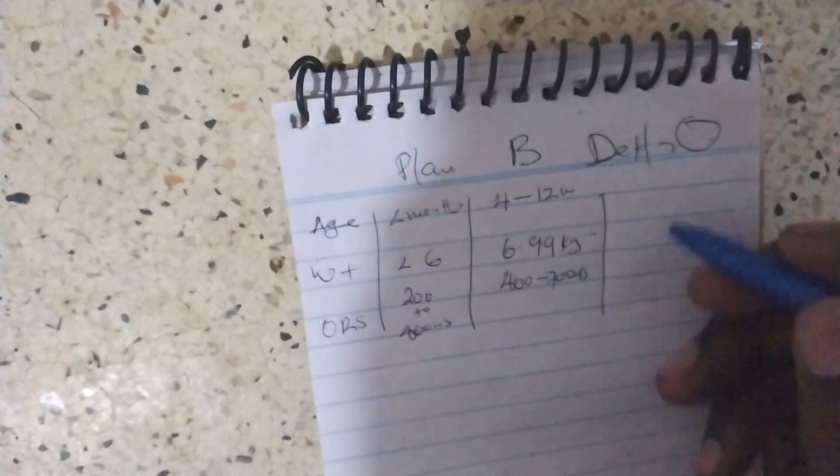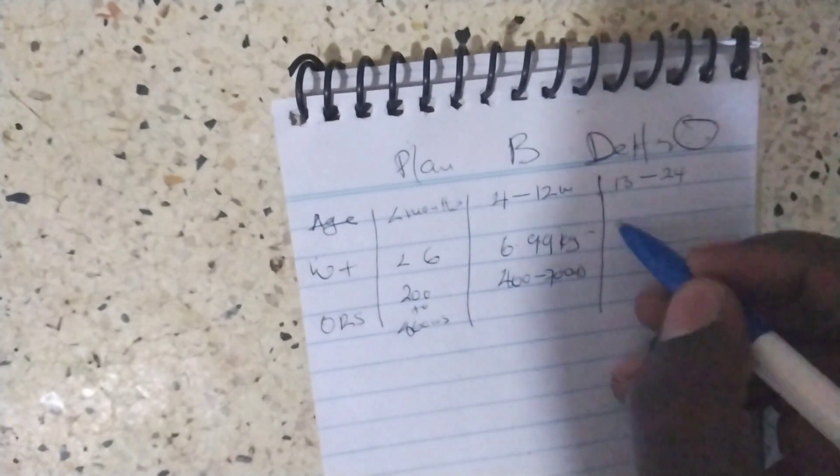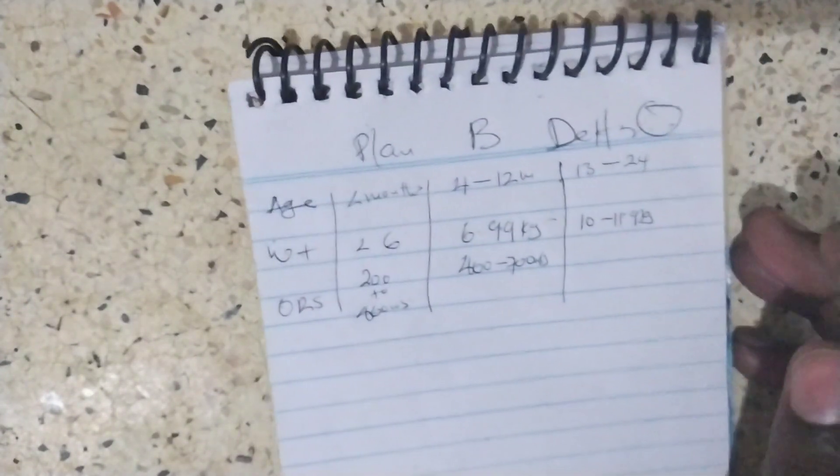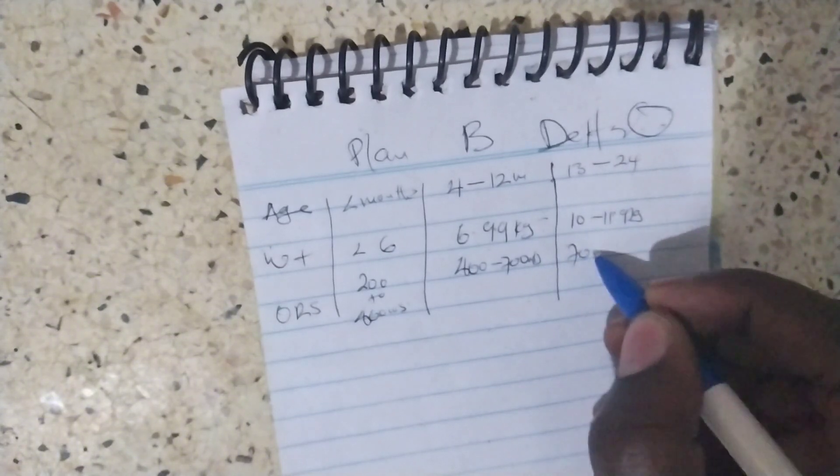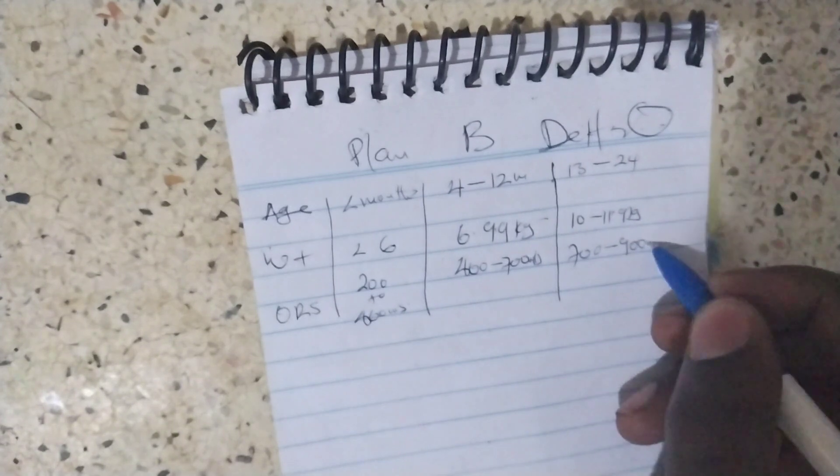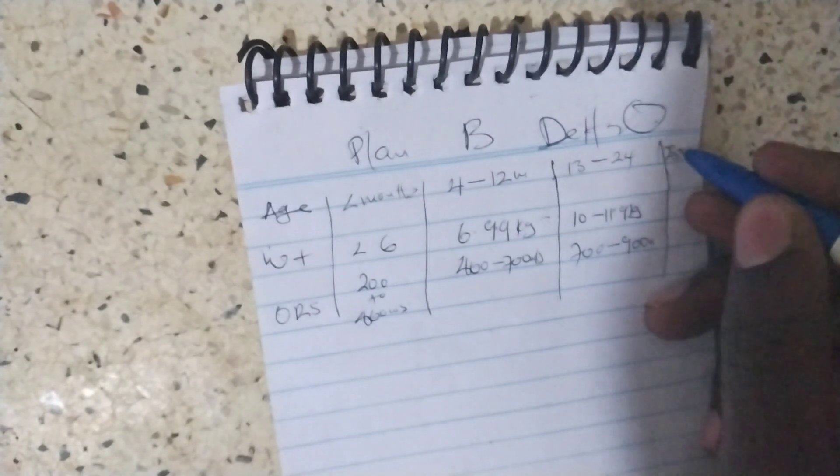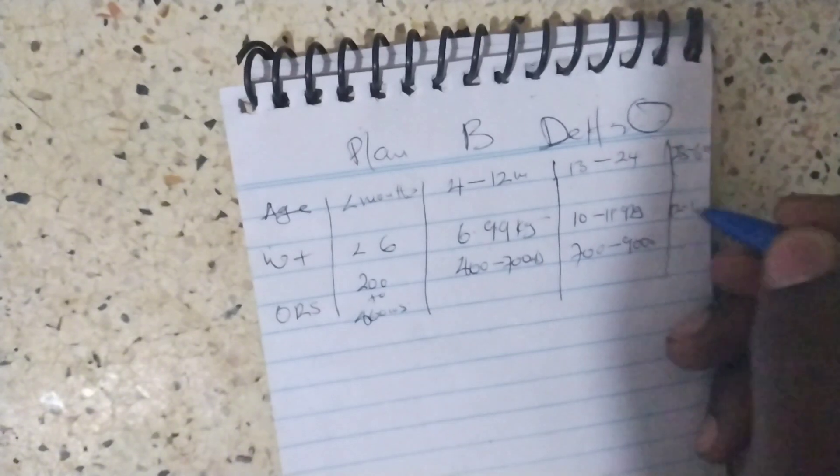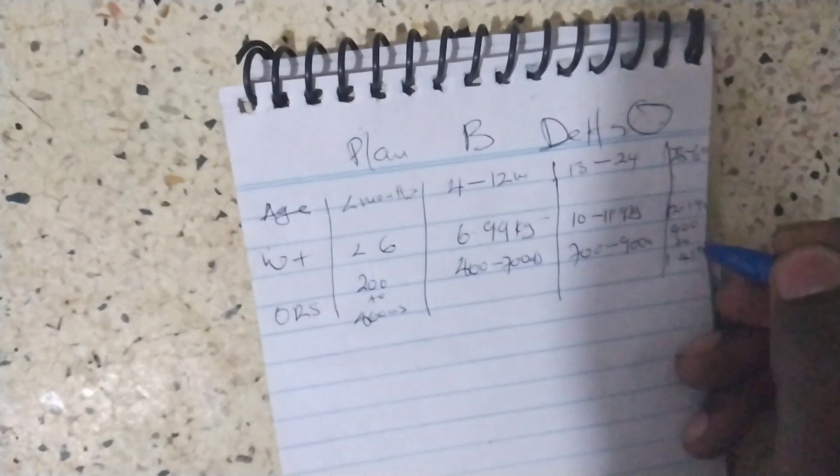If the baby is 13 months to 24 months and the weight is ten to eleven point nine kilograms, we give 700 to 900 meals. And if the baby is 25 months to 60 months and the weight is 12 to 19 kilos, we give 900 meals to 1.4 liters in four hours.